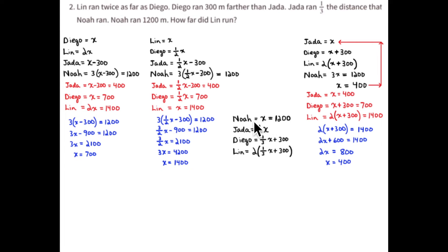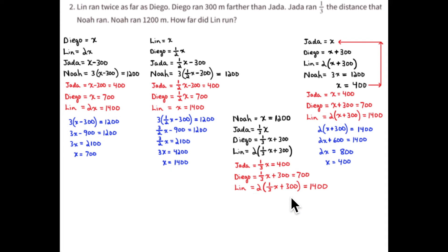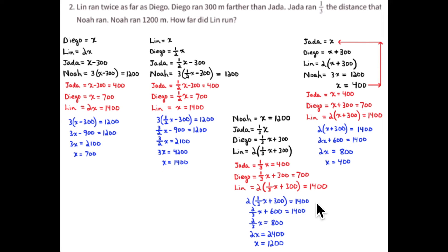Same idea with Noah equal to x. They give you Noah's run in the problem, so x equals 1,200. Jada's run is one-third that length, or 400 meters. Diego is 300 meters farther — 400 plus 300 is 700 meters. And Lin is two times Diego's run, so two times 700 is 1,400 meters. Here are a number of expressions and their equivalent values. Lin's expression, once again, is the most interesting, so let's practice with that.